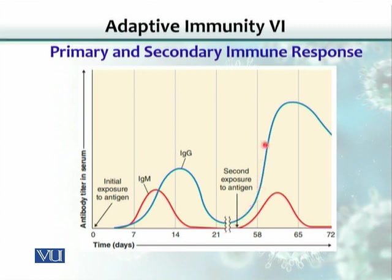But the IgG level would be much more heightened and increased. The reason is that this secondary response is due to memory cells created by the first exposure. The cells that were making IgG would disappear, but at that first exposure memory cells were generated.